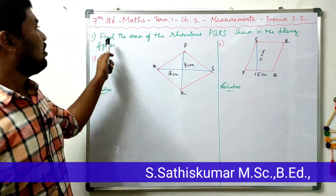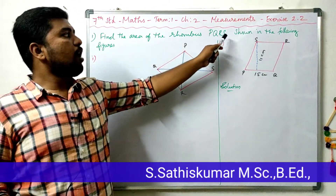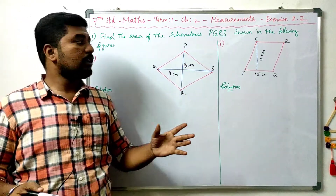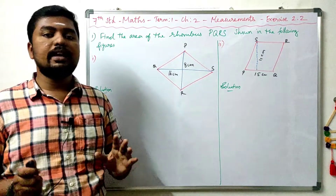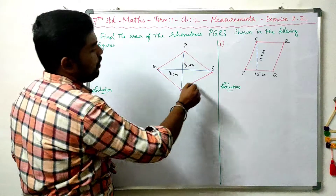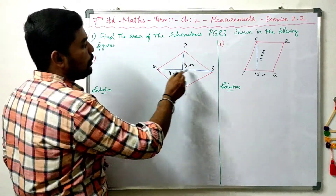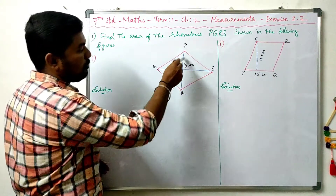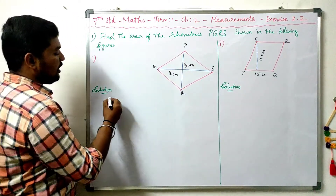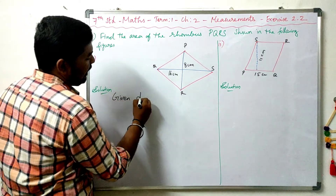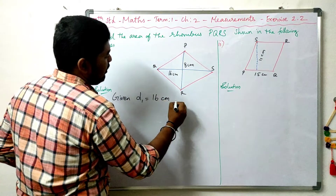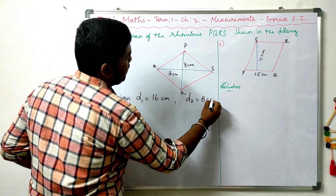First question: find the area of the rhombus PQRS shown in the following. There are two rhombuses. The first one is PQRS. Here are the diagonal measurements. QS is 16 cm and PR is 8 cm. So, given data: take diagonal D1 as QS = 16 cm, and D2 as 8 cm.